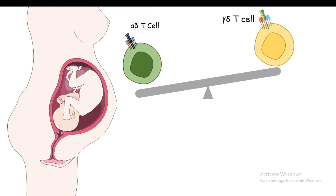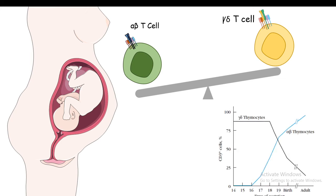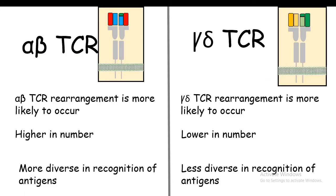During pregnancy or the gestational period, the gamma-delta T cell number is high, but as development progresses and after birth, the gamma-delta T cell count decreases dramatically while alpha-beta TCR-containing T cell numbers increase. There is considerable debate about their functions, but what is known is that alpha-beta T cells are important for combating pathogens, whereas gamma-delta T cells provide immunity against protozoal infection, at least as demonstrated in mice.